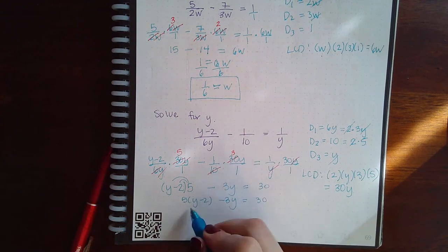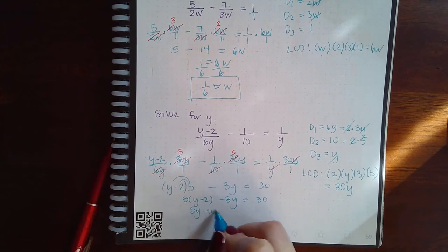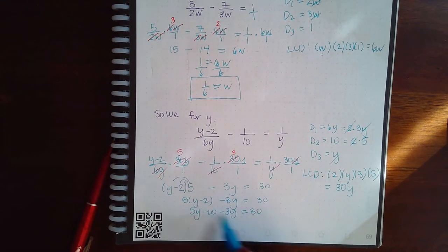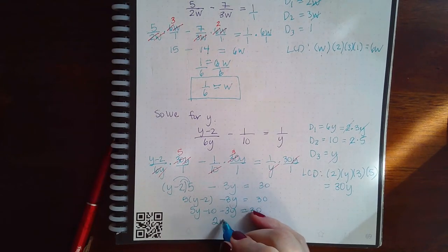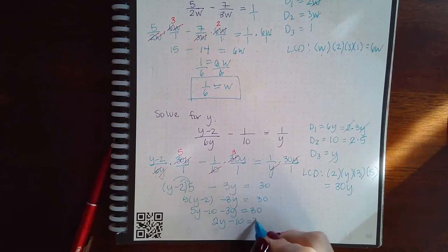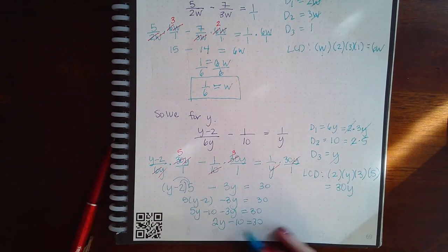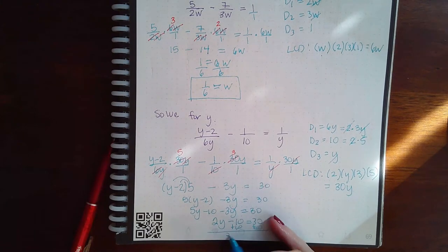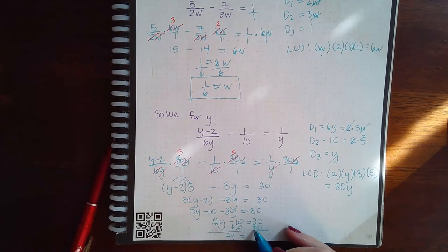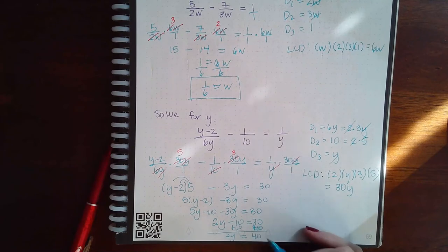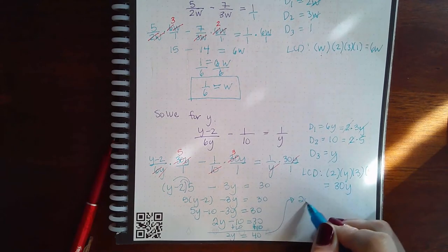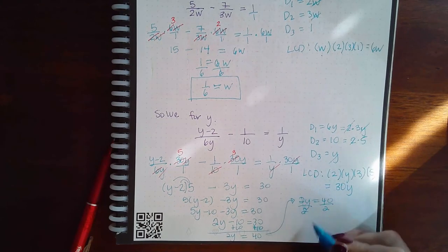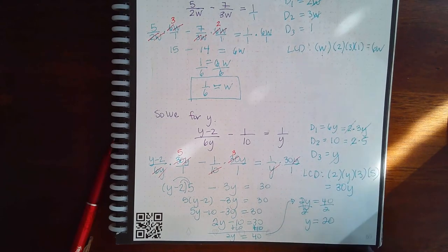So if I distribute this 5, I get 5Y minus 10 minus 3Y equal to 30. If I combine my like terms, I end up with 2Y minus 10 equal to 30. If I add 10 to both sides, I end up with 2Y equal to 40. And then if I take that equation, 2Y equal to 40, and I divide both sides by 2, I end up with Y equal to 20.